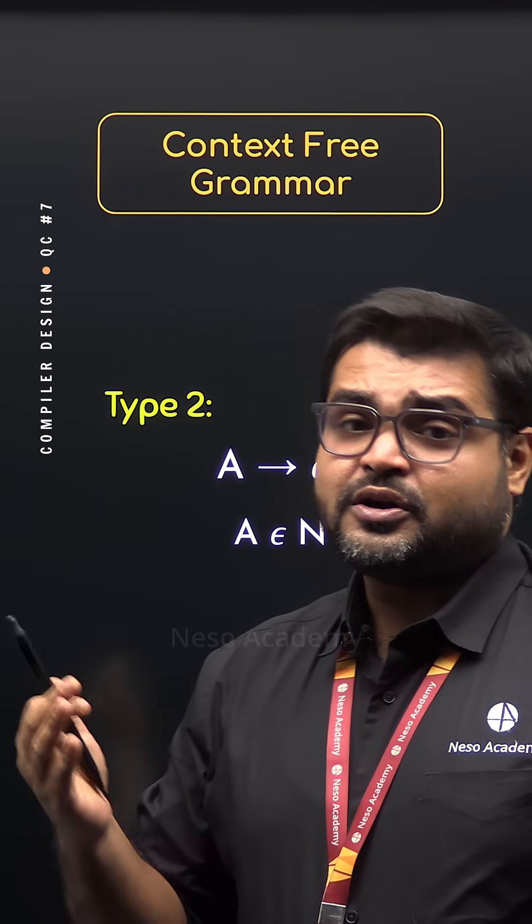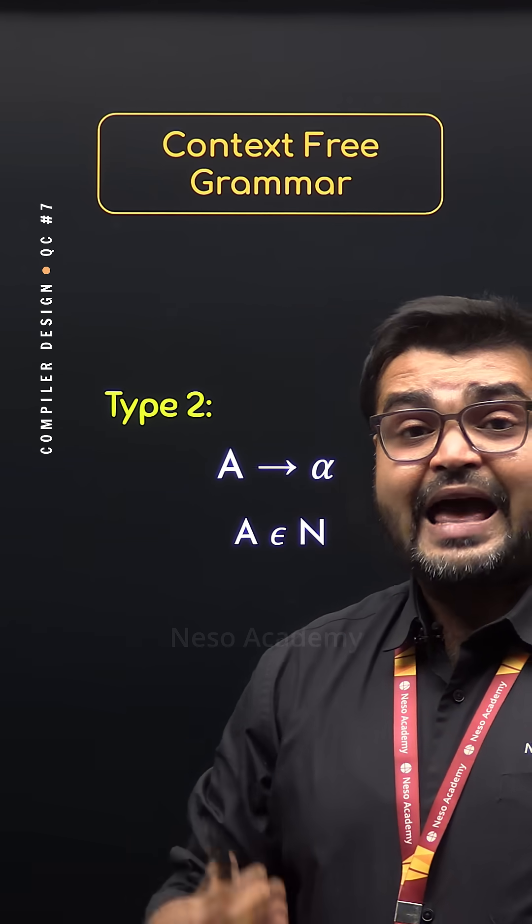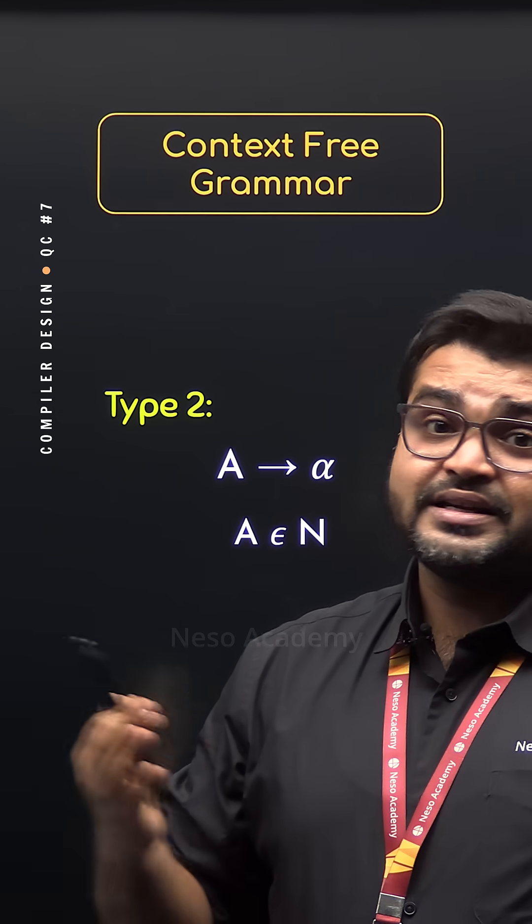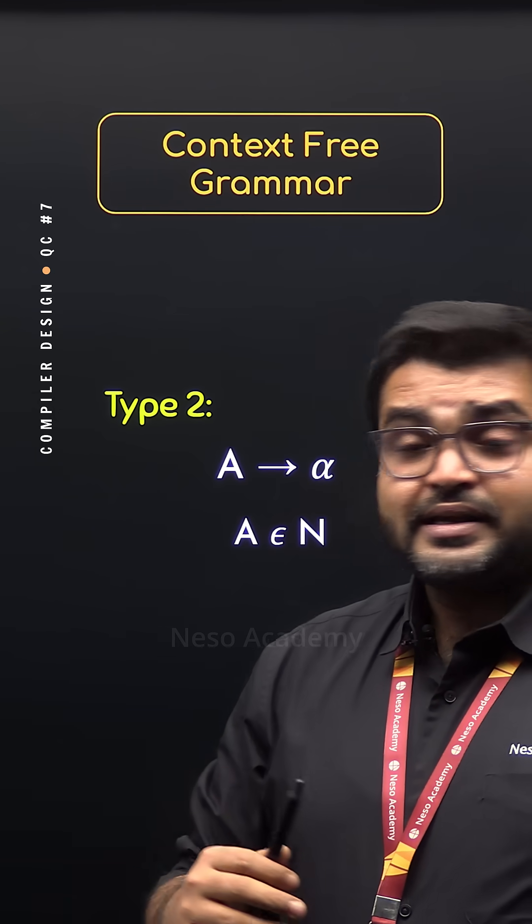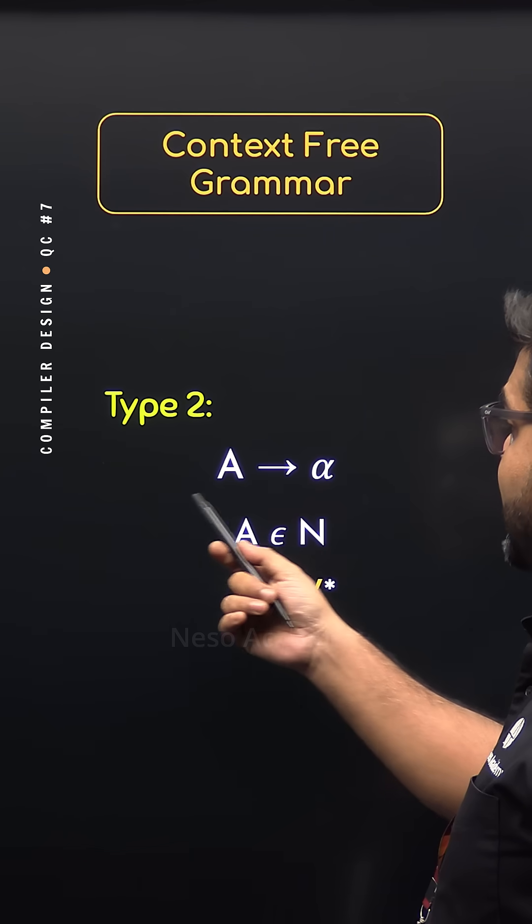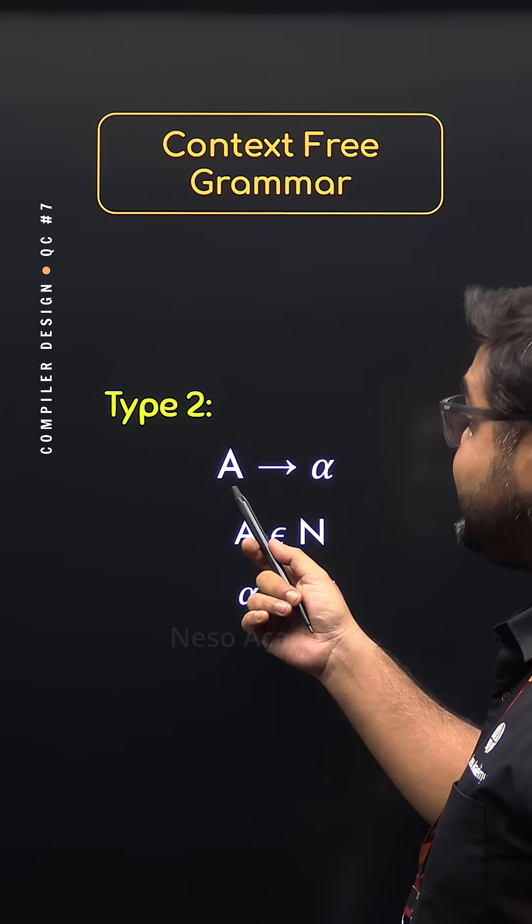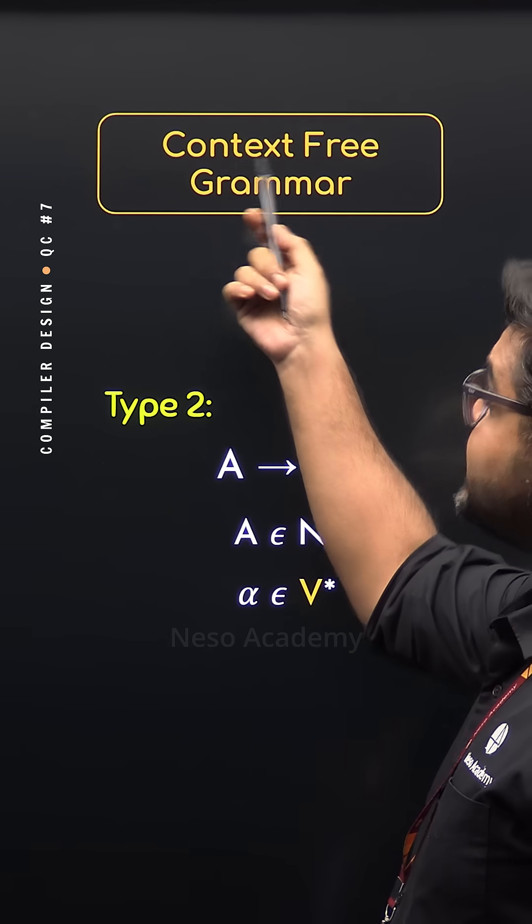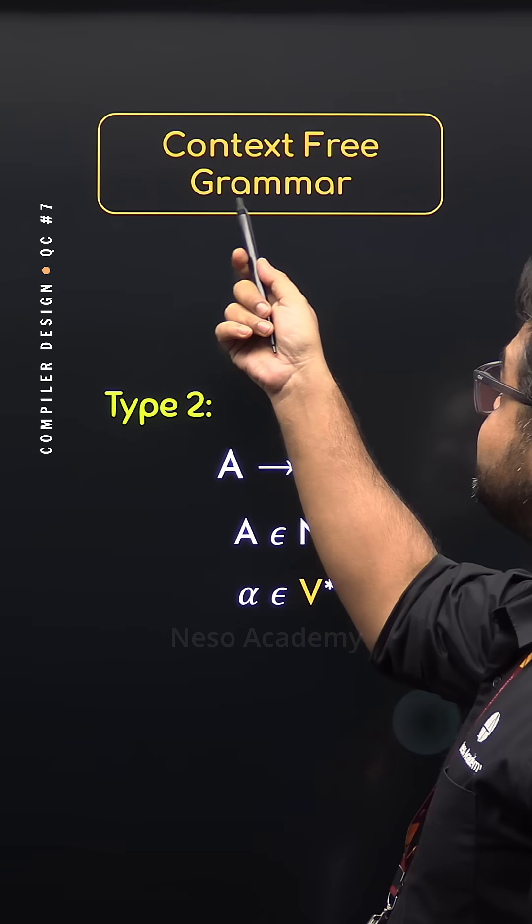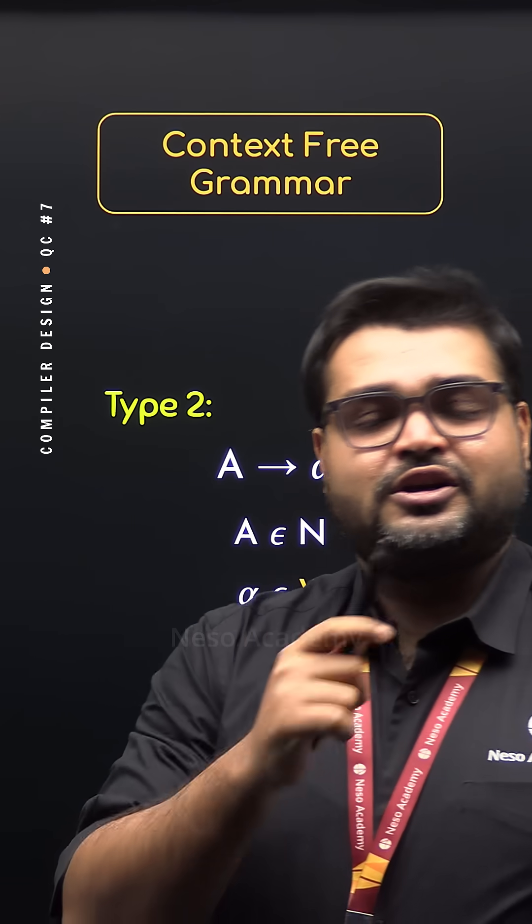Now what is α? α can produce anything. It can be the empty string. It can be any string over N union T. So we can also say α will belong to V*. Since in the production rules the left-hand side is free of any context, that's why Type 2 grammar is also known as context-free grammar.